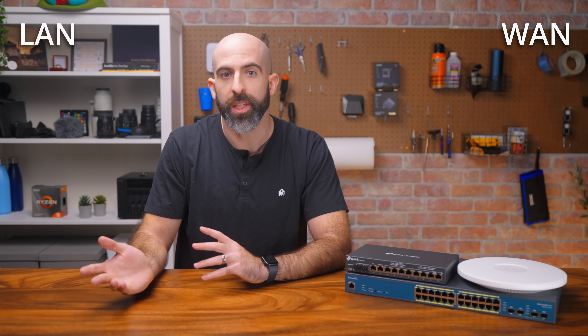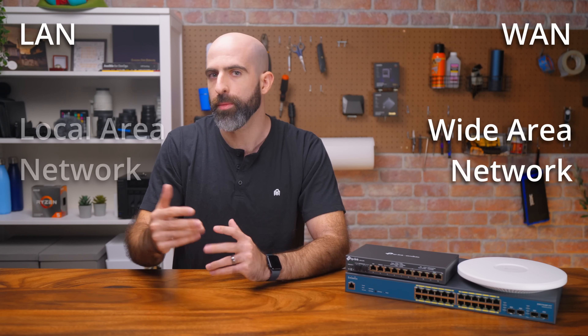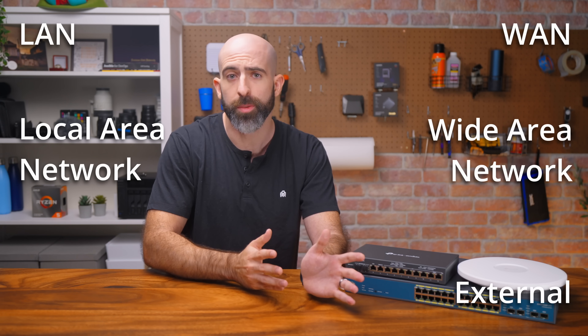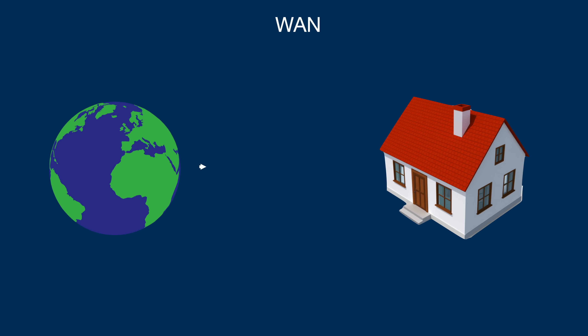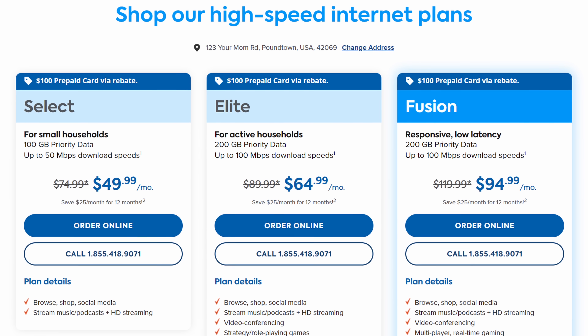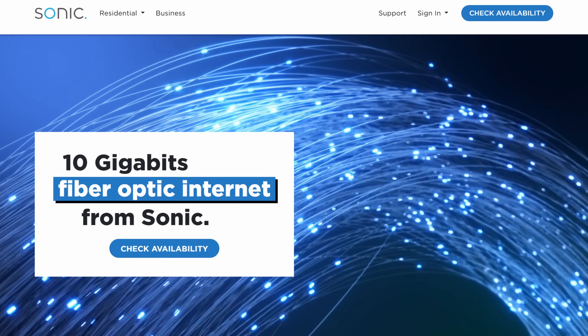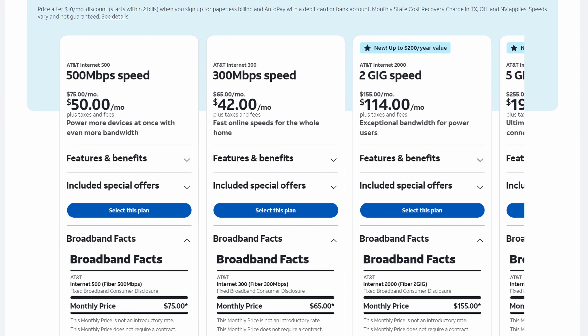To answer the question of how much network speed you actually need, you first have to ask if we're talking about WAN or LAN speeds — wide area network or local area network — or even more simply, external speeds versus internal speeds. Let's start with WAN speeds. This is going to be the speeds you pay your internet service provider for, and will determine how fast you can download things from the internet. This number can vary wildly from 50 megabit per second up to 10 gigabit per second, and all kinds of options in between.